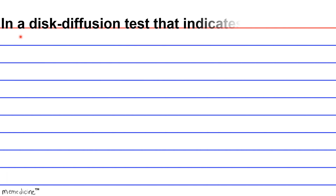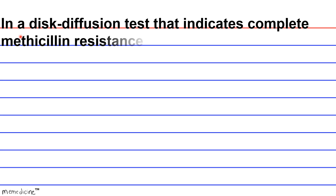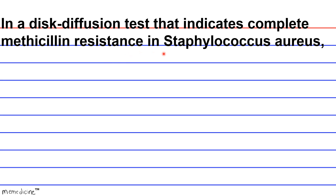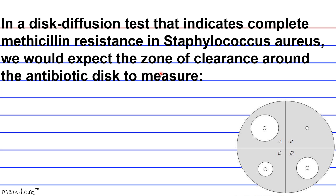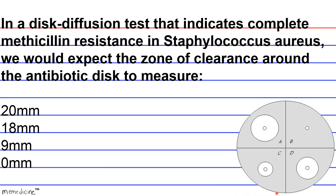Question 2: In a disc diffusion test that indicates complete methicillin resistance in Staphylococcus aureus, we would expect the zone of clearance around the antibiotic disc to measure: A. 20 millimeters. B. 18 millimeters. C. 9 millimeters. Or D. 0 millimeters.